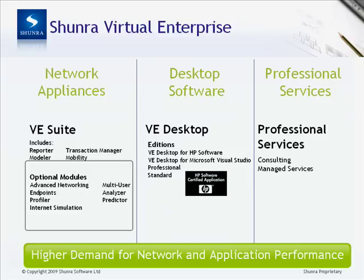Through the VE network appliance technology, performance testing groups are able to accurately predict the network impact on application performance. QA groups are also served through Shundra's technology, both with the VE desktop solution, Shundra's software solutions, and the VE appliance. Additionally, WAN emulation can be done in conjunction with functional testing, allowing a QA engineer to determine how an application will perform over the WAN. With VE desktop, a developer can test the impact of their code on application performance on the WAN. And Shundra's professional services can manage WAN emulation testing for you by sending experts to your offices for consulting and managed services.